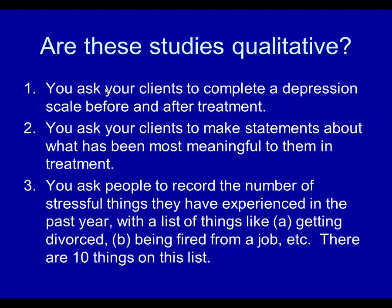Number three: you ask people to record the number of stressful things they've experienced in the past year, with a list of things like getting divorced, being fired from a job, and so forth. Assuming there are ten things on the list and you ask them to indicate how many they've experienced — the answer is it's quantitative, not qualitative. They will give you a number with numerical value from zero to ten.